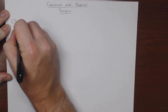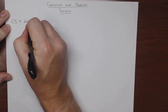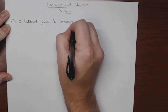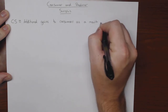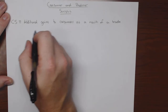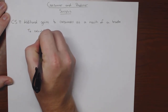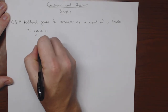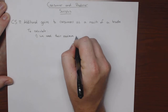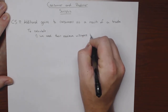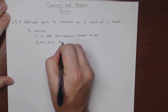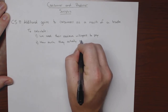Consumer surplus, which I'm just going to abbreviate as CS, is the additional gains to consumers as a result of a trade. To calculate it, we need to know two things: one, we need to know their maximum willingness to pay, and two, we need to know how much they actually paid.